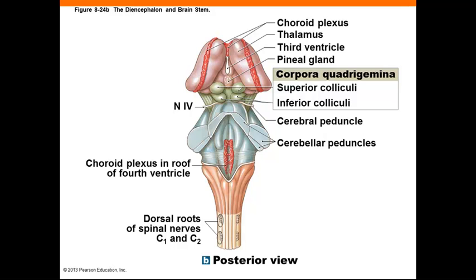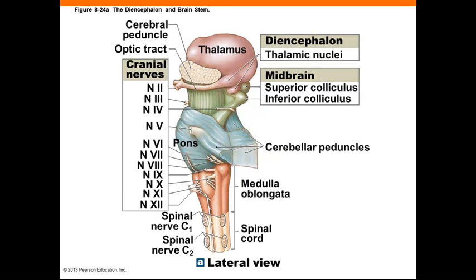Note the cerebral peduncles, which are tracts that link the cerebral cortex, basal nuclei, and the brainstem. This is another view of the midbrain, and it contains views of the motor nuclei for cranial nerves 3 and 4. The cerebral peduncles contain descending fibers. The midbrain also has reticular formations, which is a network of nuclei related to the state of wakefulness, and the substantia nigra, which influences muscle tone.